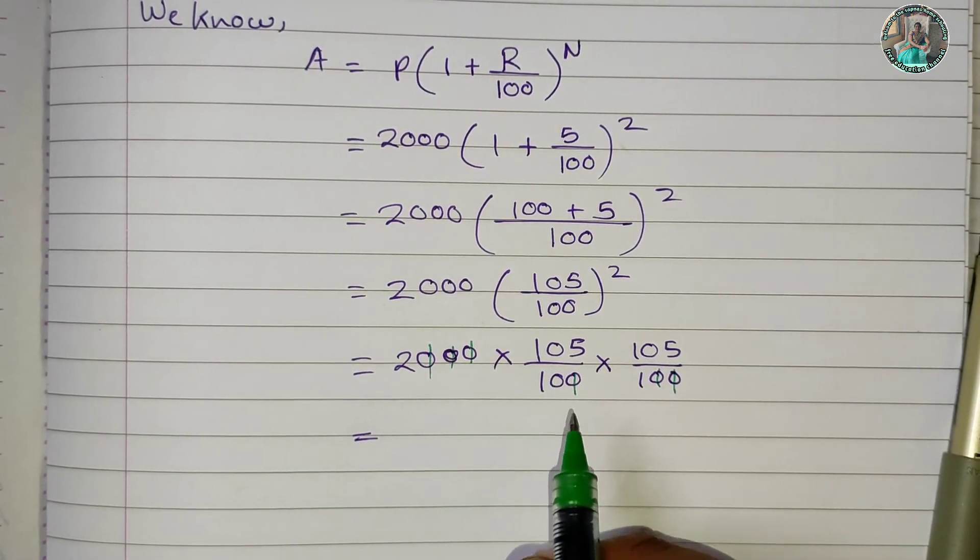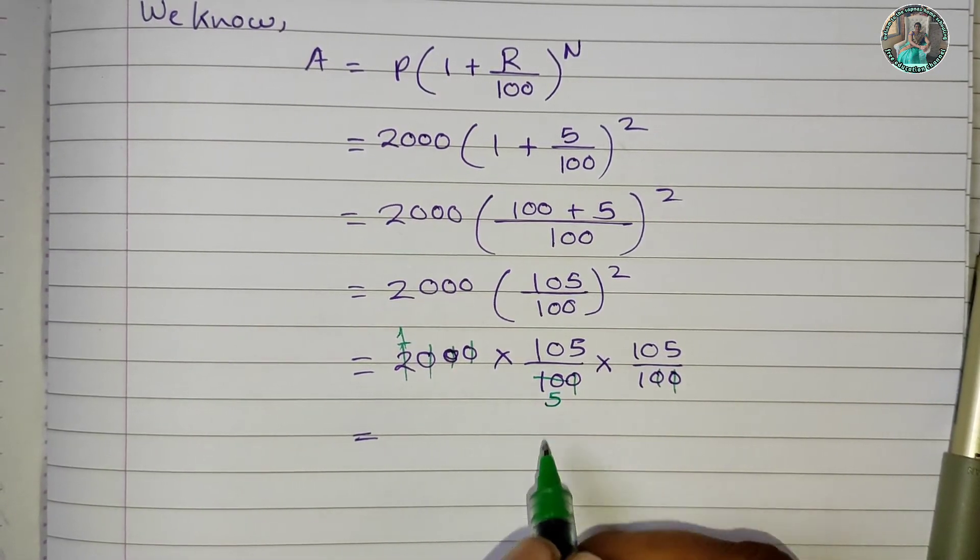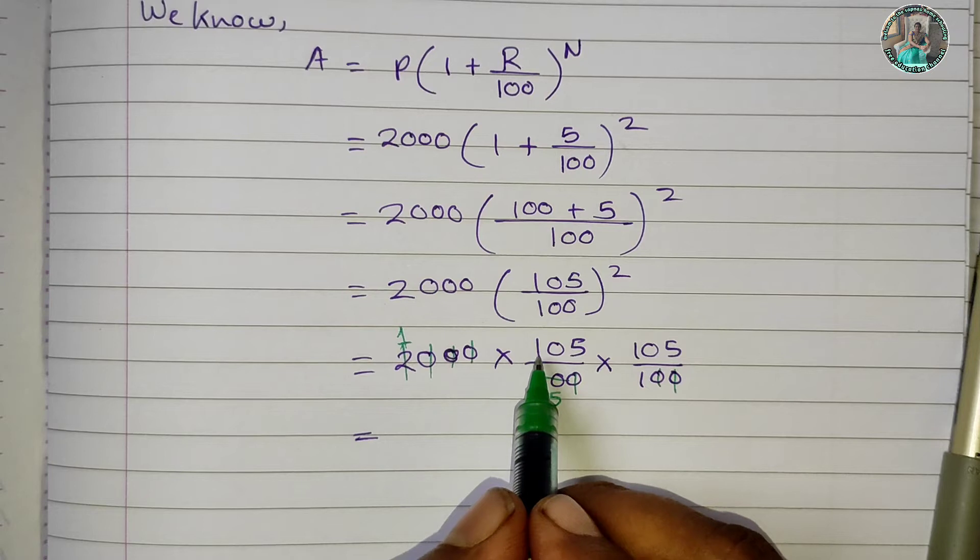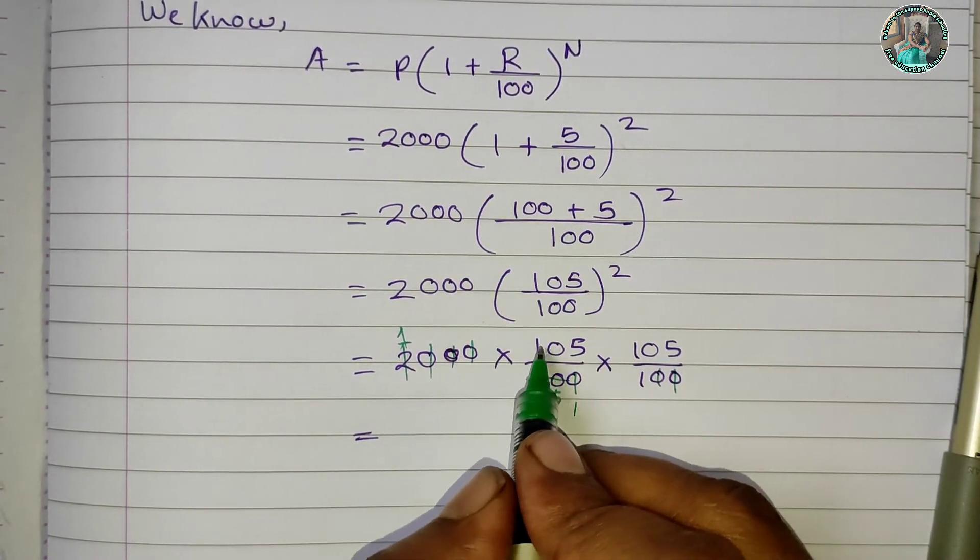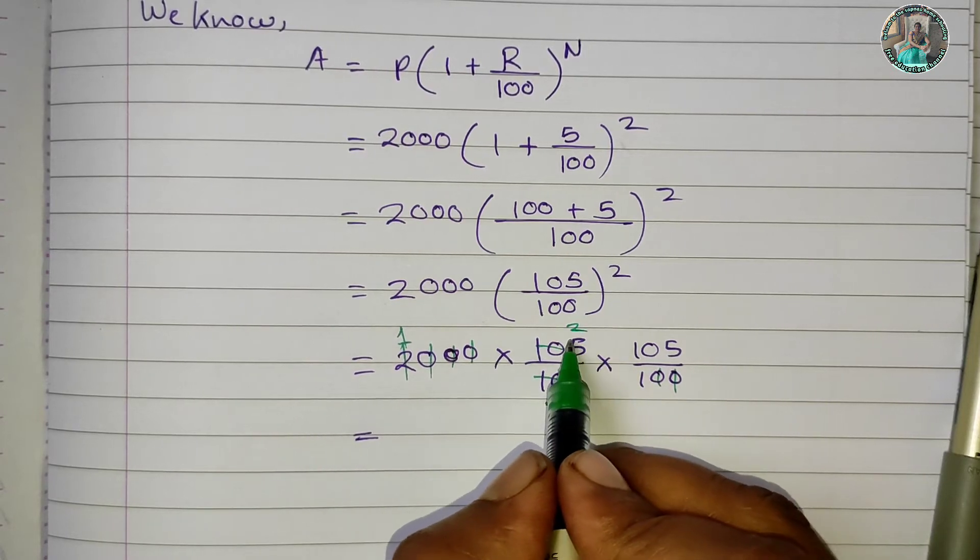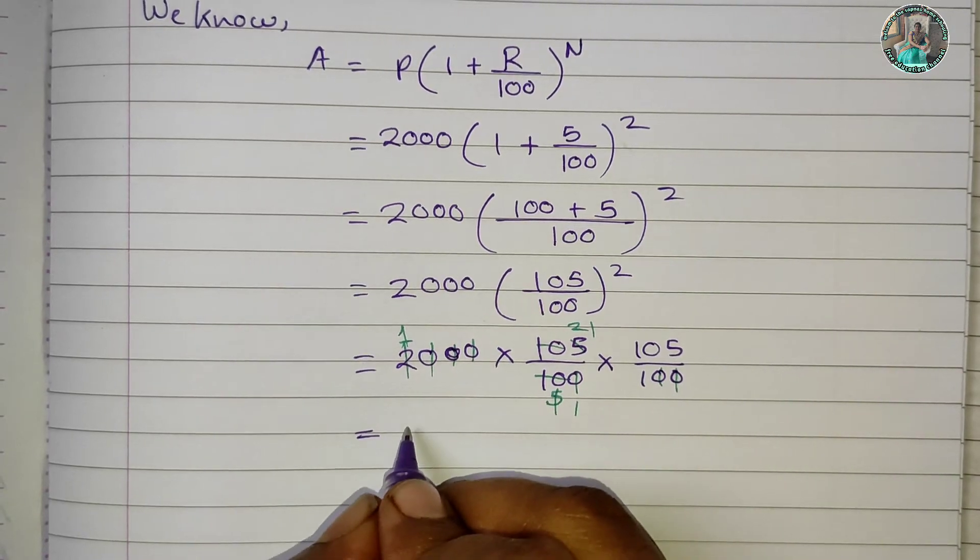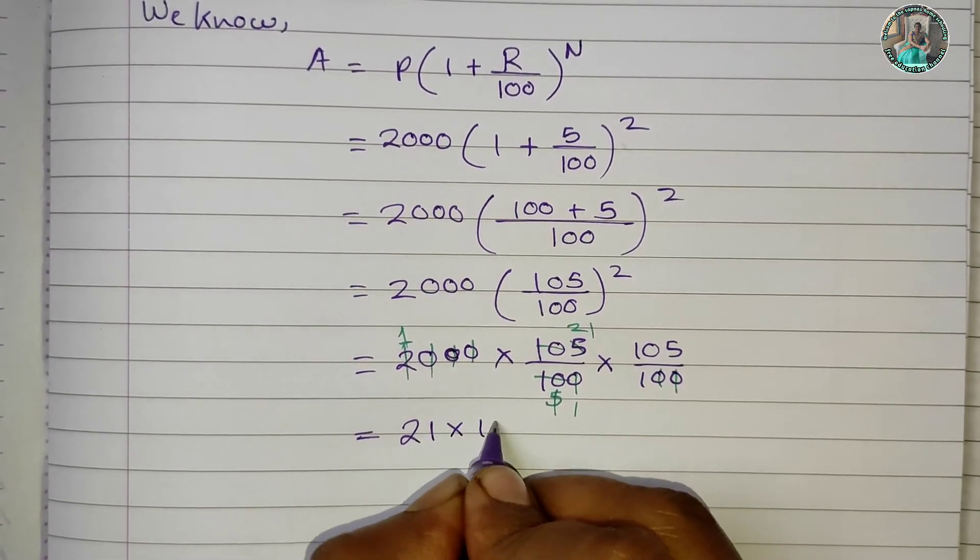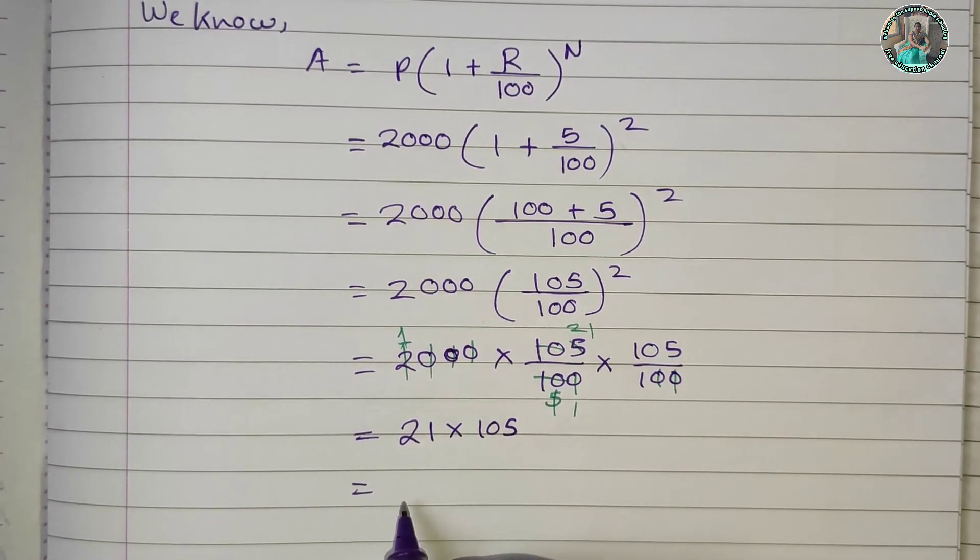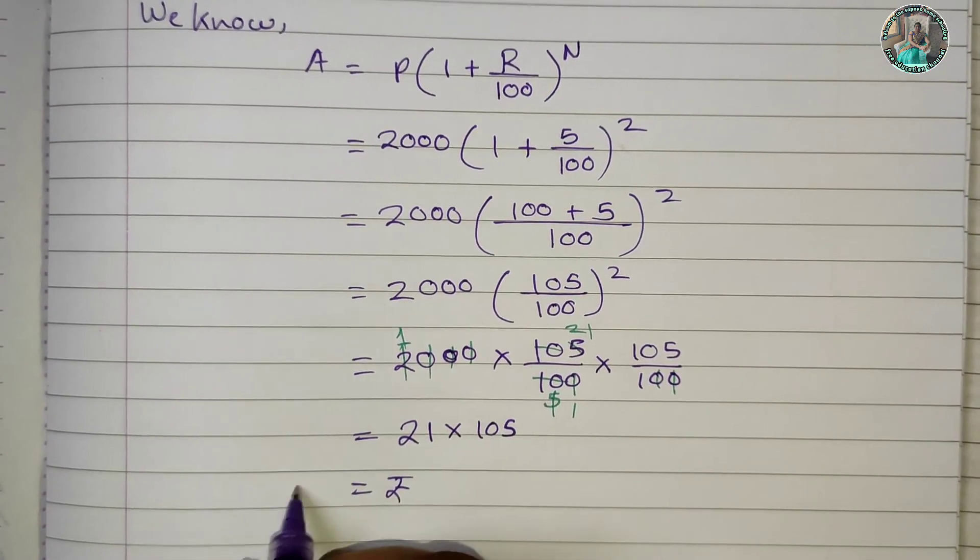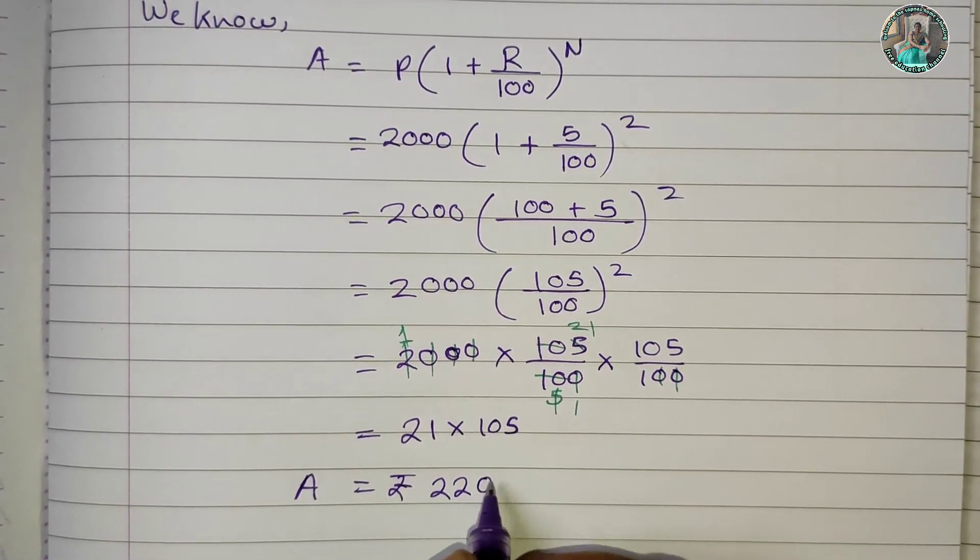Multiplying: 5 ones are 5, 5 twos are 10, and so on. Carrying forward through the calculation, we get Rs. 2205 as the amount.